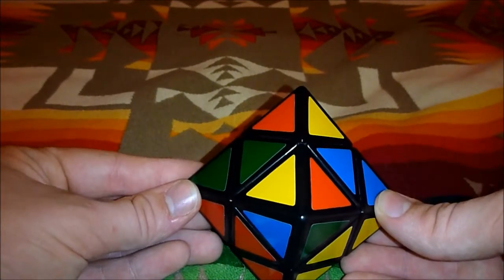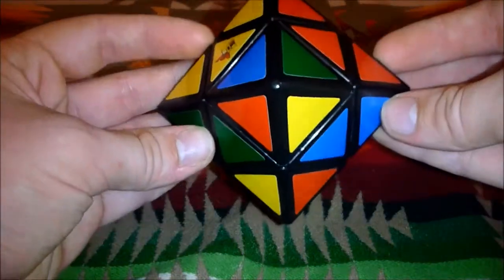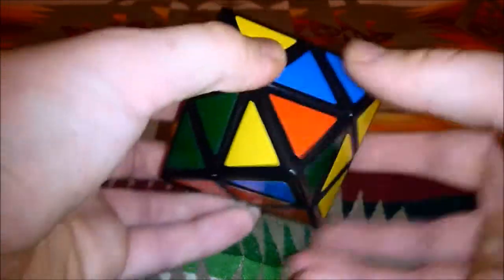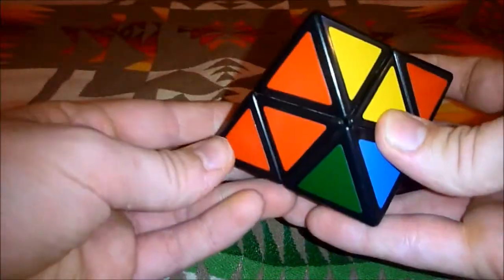So you're going to do that move two more times, and this is how you would start if the ones that are flipped are adjacent to each other. So do it two times. And that was one. That was number two.